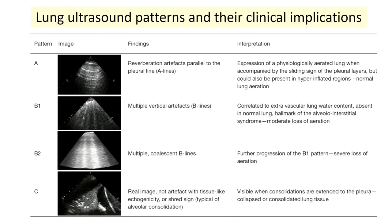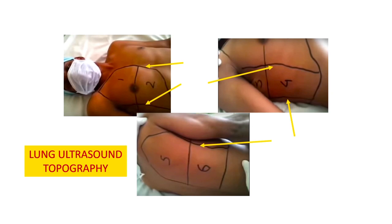We all want the normal aerated A-profile. If we come across any other pattern, we do interventions and see how it progresses. When we want to follow up any disease, we need a map of where the pathology lies. We can divide the lungs into six areas: two anterior, two lateral, two posterior. A good proportion of the lung lies posteriorly — the dorsal portions receive maximum perfusion due to gravity-based distribution, but are also prone to gravity-based problems like effusion, collapse, and congestion, leading to de-aeration.